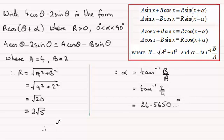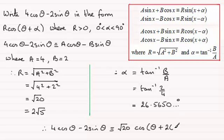So therefore, when it comes to expressing 4 cos theta minus 2 sine theta in the form r cos theta plus alpha, it's going to be root 20, or you could write it as 2 root 5, it's up to you. And then it's going to be the cosine of theta plus alpha. And if I round alpha to 3 significant figures, that's going to be 26.6 degrees.